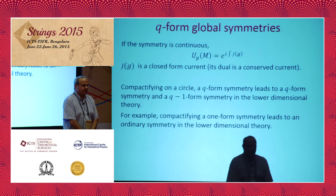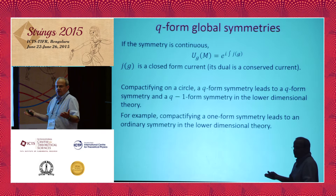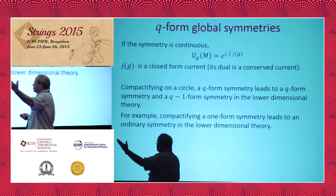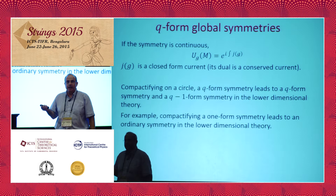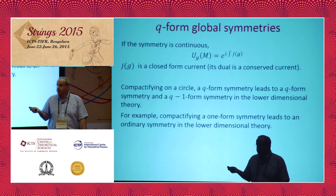We can compactify the space. If space is, say, R3 times S1, then the Q-form symmetry splits into different symmetries depending on whether the manifold M does or does not wrap the circle. A Q-form symmetry in higher dimensions leads to a Q-form symmetry and a Q-minus-1-form symmetry. One special case, important later: if we take a one-form symmetry in four dimensions and compactify on a circle, we find an ordinary zero-form symmetry in the lower-dimensional theory.